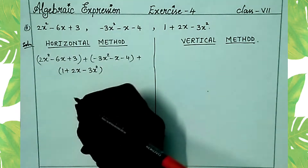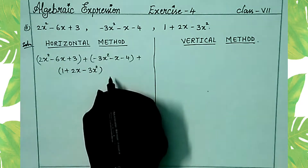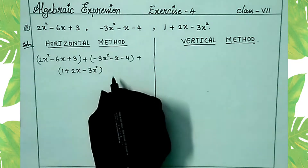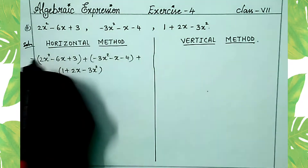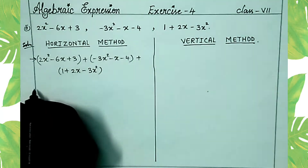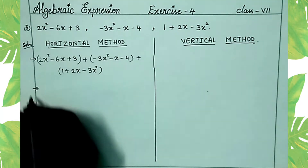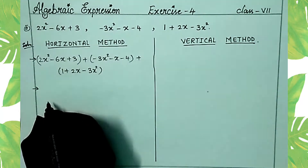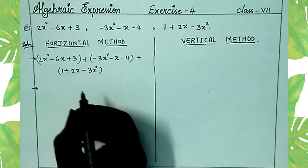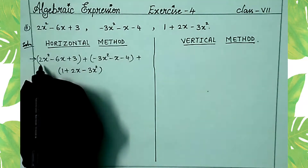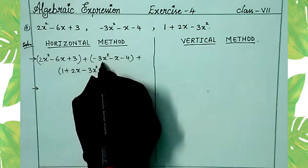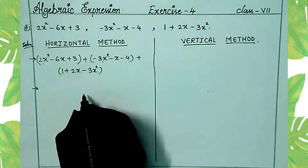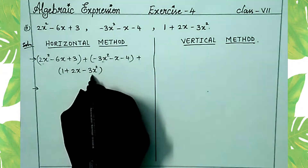So what we have done in the first step: we have added the positive symbol between the expressions. In the second step, write the like terms together. Here it is 2x² minus 3x² minus 3x² — write them together.